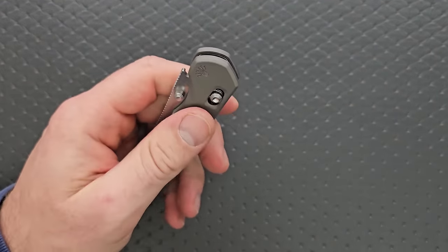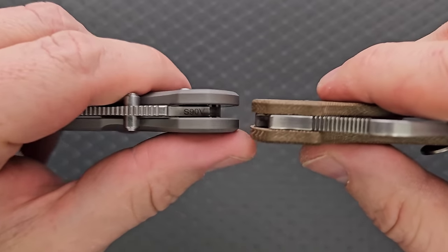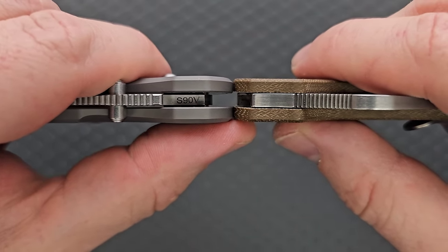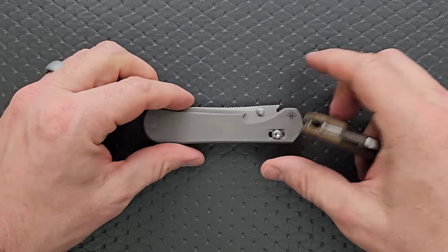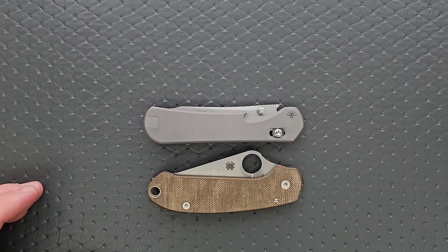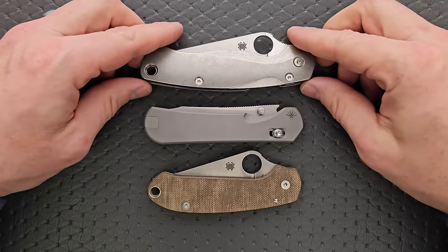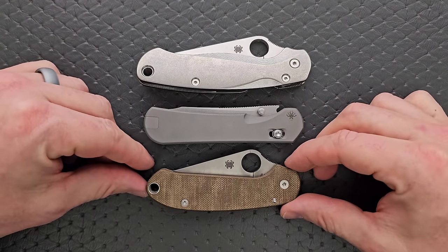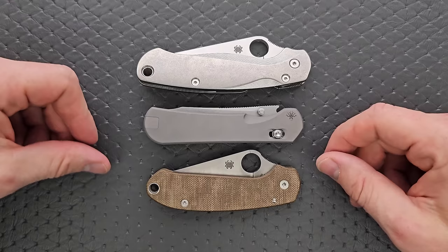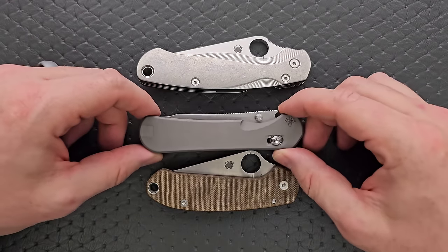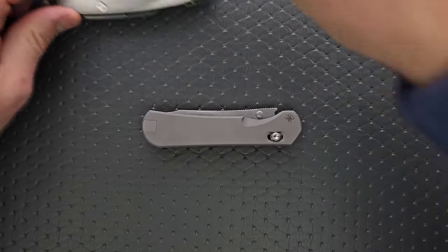Let's go ahead and do carry profile. So thickness up against the Spyderco Para 3. It's about the same, honestly. Length and height up against the PM2 and the Para 3. You can see here that this is really just going to be a pretty darn easy carry experience. It's no longer than the Para 3. It's certainly nowhere near as tall. And it's not super duper thick.